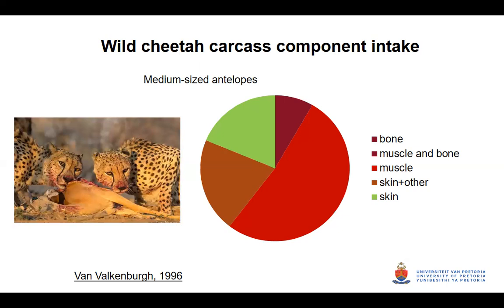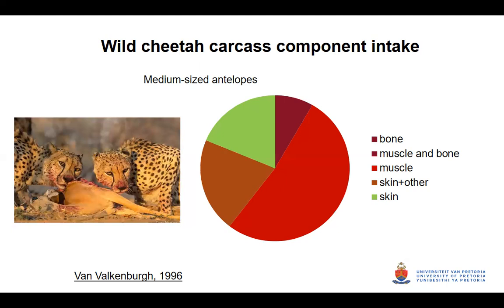Cheetahs must eat very quickly — they don't drag prey up into trees like leopards do, but eat on the ground and consume most of the carcass within an hour or two. They are quite selective, going for the organs but also eating most of the skin. Unlike leopards, they don't eat many birds or warthogs — almost all of their diet comes from antelope, which are ruminants. Only about 50% of the diet is muscle meat; the other 50% is skin, bone, and internal organs.